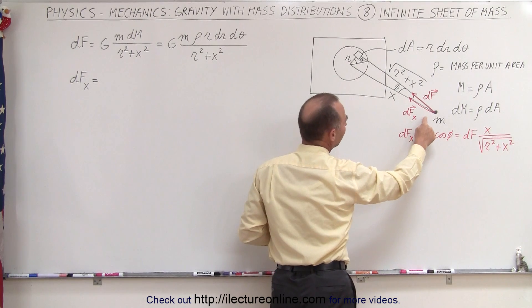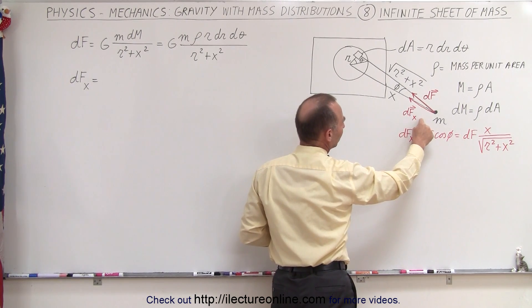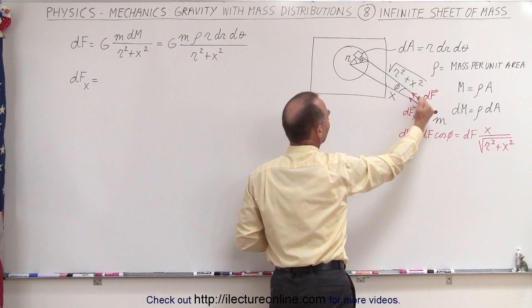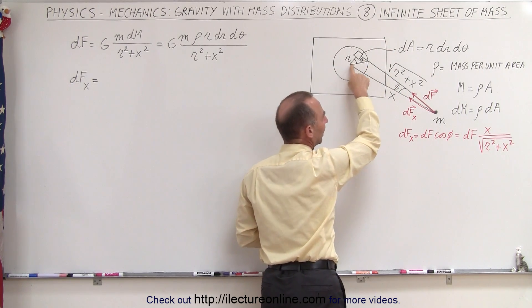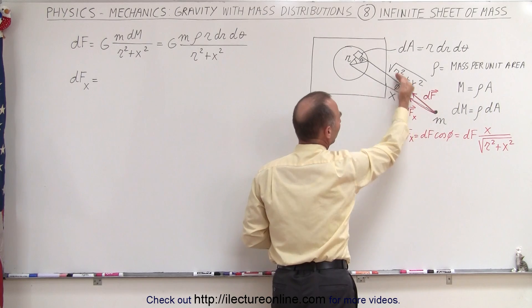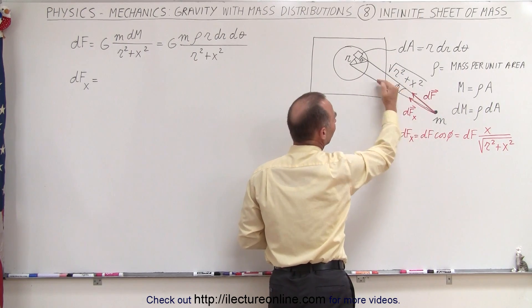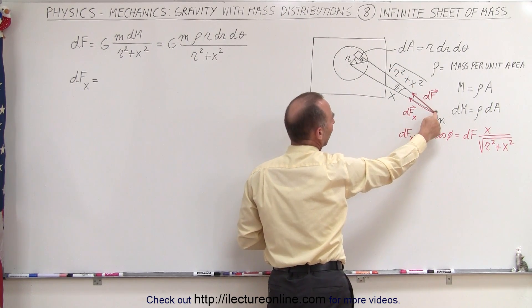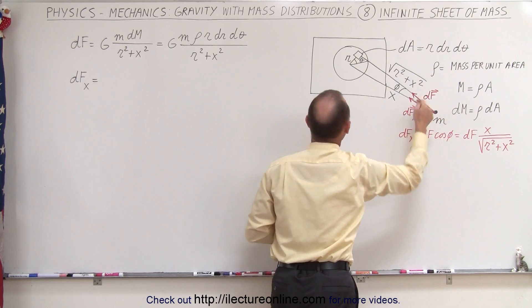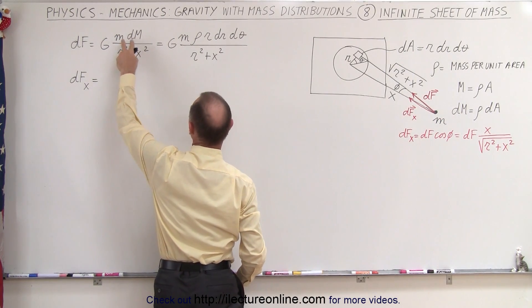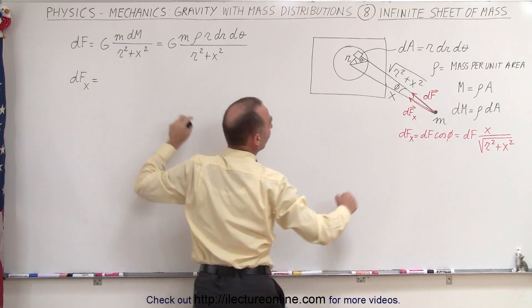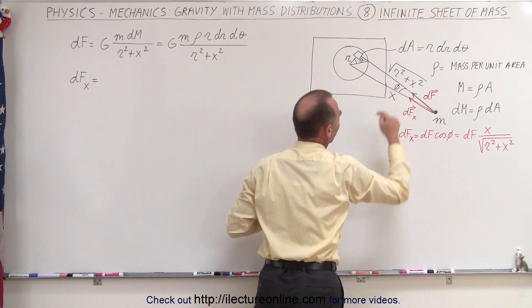Now we want to only use the dF in the x direction. So notice that if you start looking at any other place on the sheet, other than the point directly across from the small mass, we'll have an angle of phi between that line and where we're looking. And so we can calculate the small dF to be equal to this quantity right here. It's g times the product of the two masses divided by the distance squared, which is the square root of r squared plus x squared.